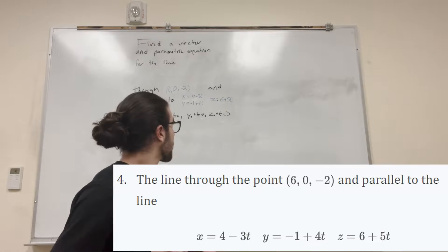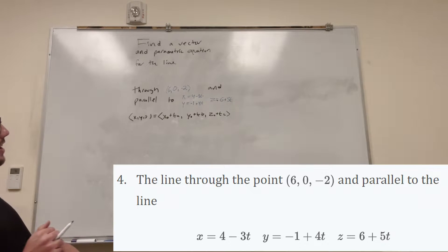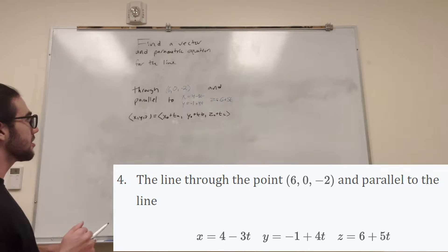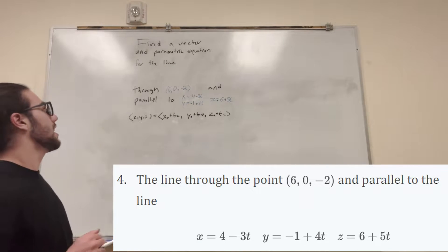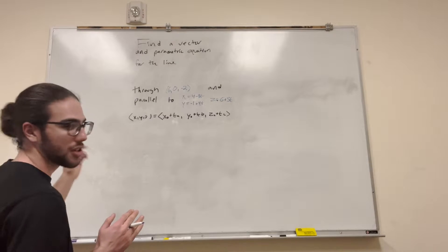What's up, Cal gang? Today we've got some vector work. It says find a vector and parametric equation for the line that goes through (6, 0, -2) and is parallel to this vector. So it gives us a vector in parametric form, and it wants us to find another one that's parallel to it but through a different point.